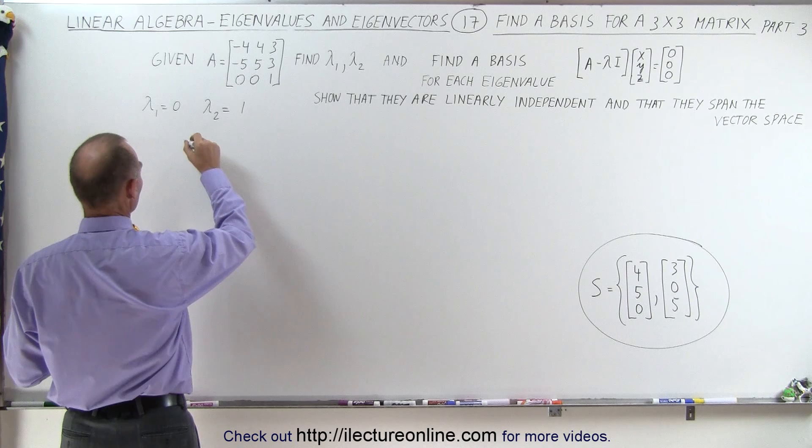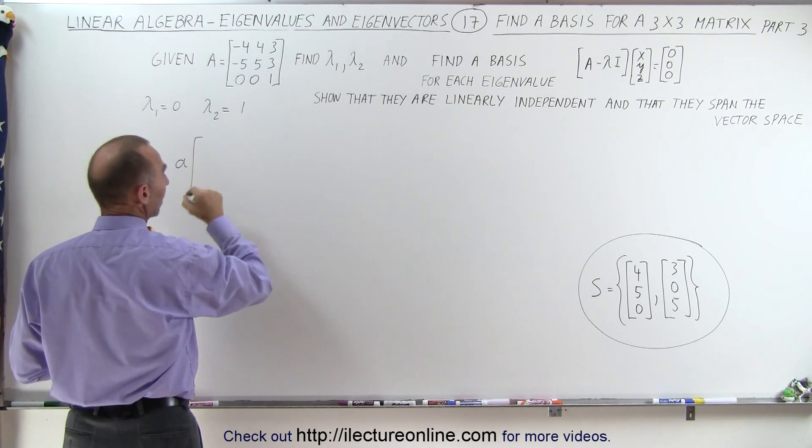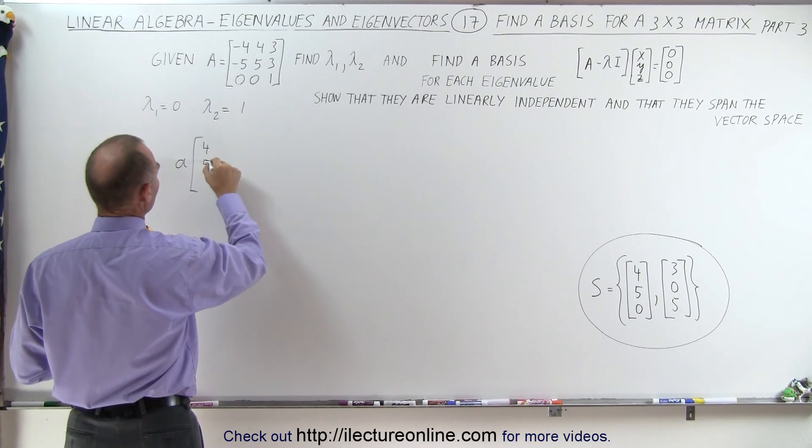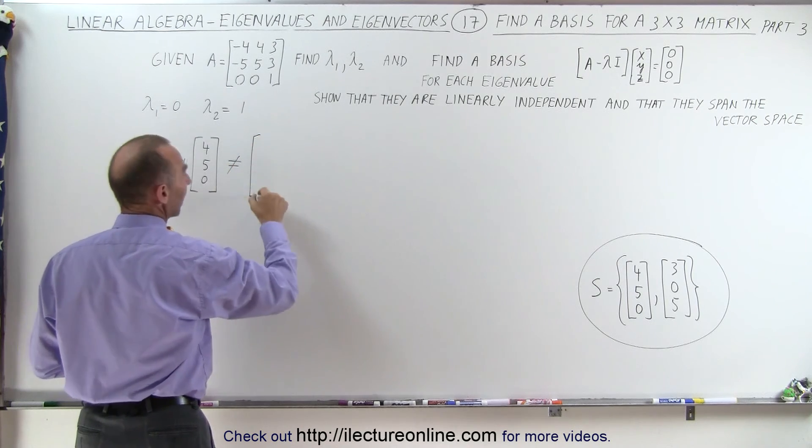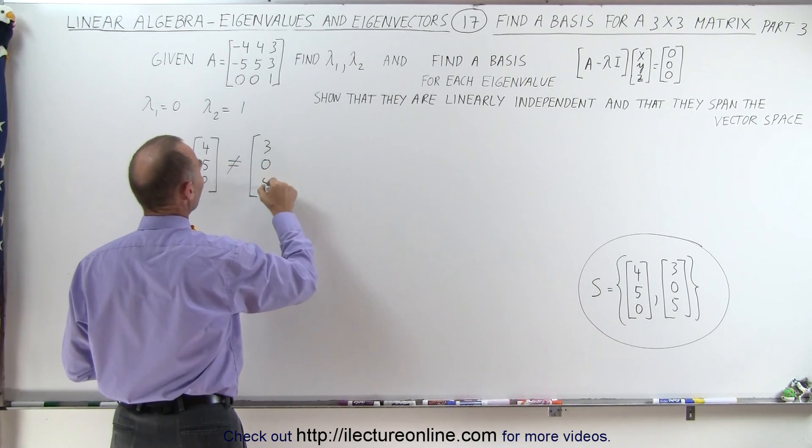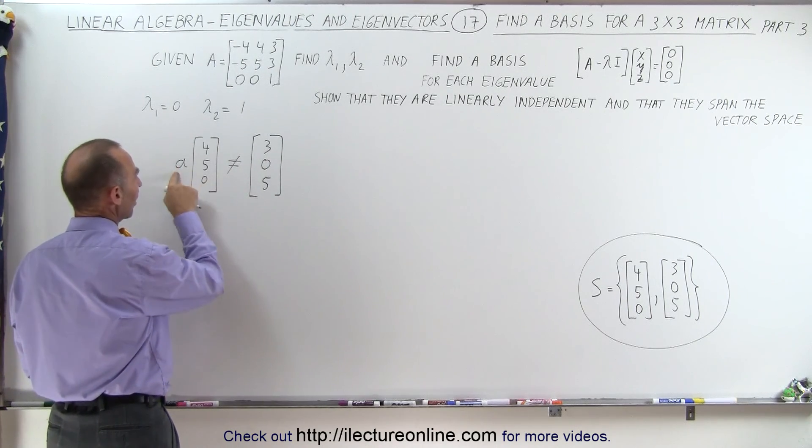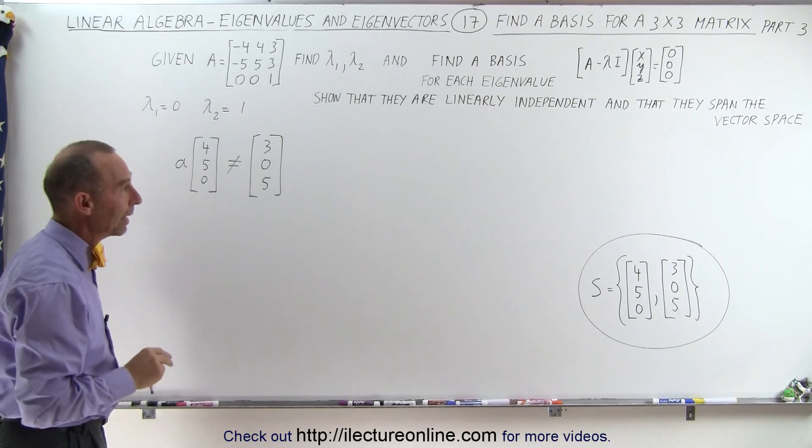And that's easy to show because if there's some constant a such that we multiply the vector [4, 5, 0], there's no way possible to make that into [3, 0, 5] because there's no way that you could multiply 0 times a constant to get 5. So that alone shows that they're linearly independent.